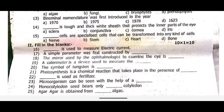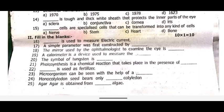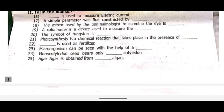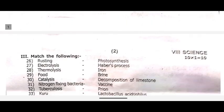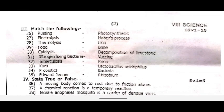Photosynthesis is a chemical reaction that takes place in the presence of dash. Twenty-two, dash is used to fertilize. Microorganisms can be seen with the help of dash. Twenty-four — paranga. Monocotyledon seeds bear only dash cotyledon. Agar agar is obtained from dash algae.